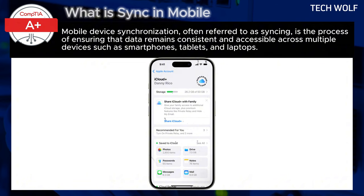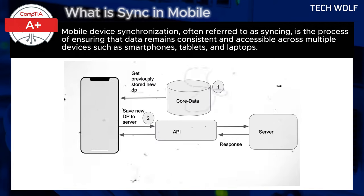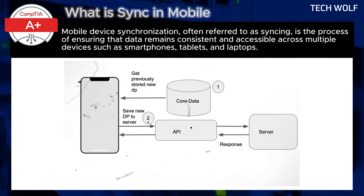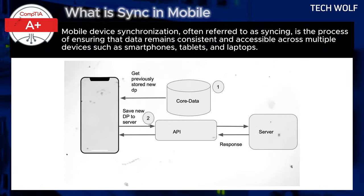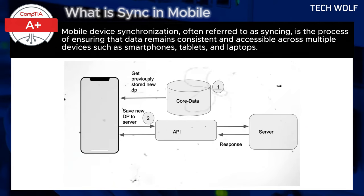This includes emails, contacts, calendar events, photos, documents, and more. For example, if you enable email sync, any email you send, receive, or delete on one device will automatically be updated across all other syncing devices.